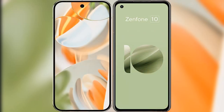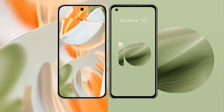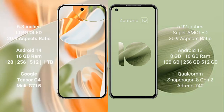I will compare the new Google Pixel 9 Pro with Asus Zenfone 10. Google Pixel 9 Pro features a 6.3-inch LTPO OLED display with 6PSR 289, while Asus Zenfone 10 features a 5.92-inch Super AMOLED display with 6PSR 289.